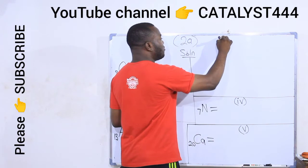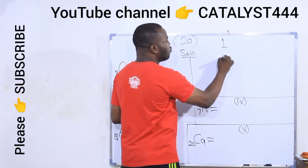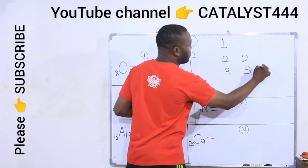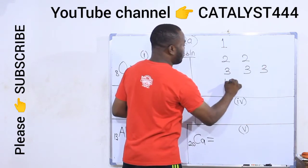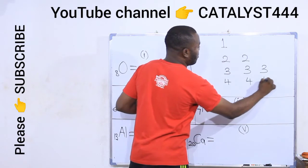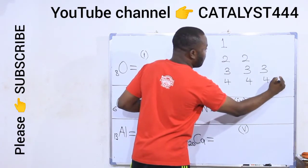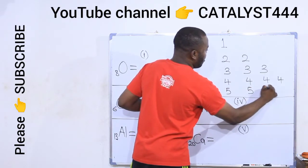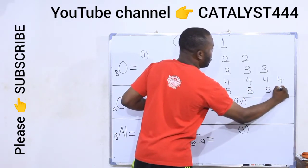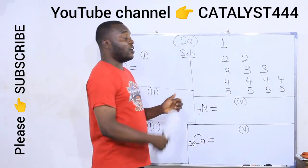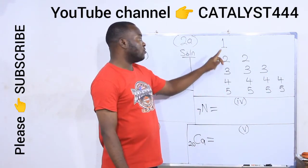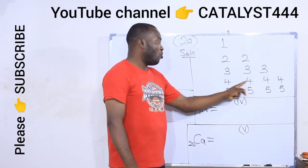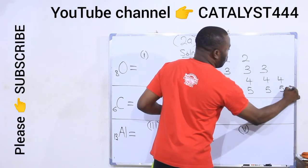To construct this table: write 1 once, write 2 two times, write 3 three times, write 4 four times, write 5 five times, and so on. That is the pattern — 1 once, 2 twice, 3 thrice, 4 four times, 5 five times.